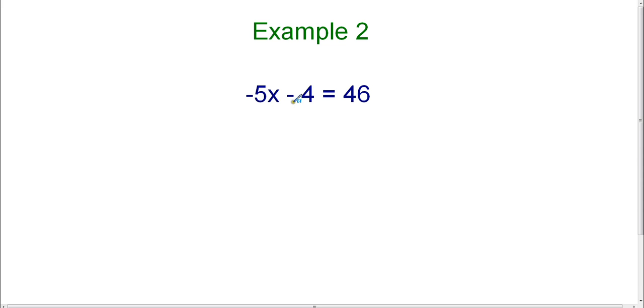That means that we need to get rid of the 4 and the negative 5. So that's going to require two steps. Your first step is always going to be to get rid of the constant. The constant in this equation is the 4. It stands alone, does not have a variable attached to it. So that's why we call it a constant.